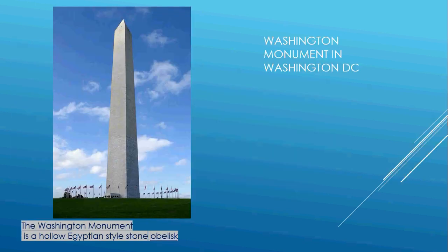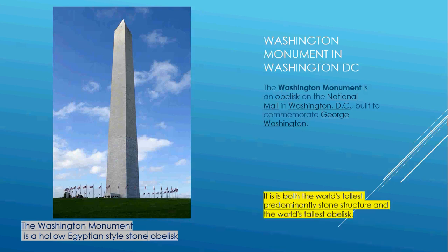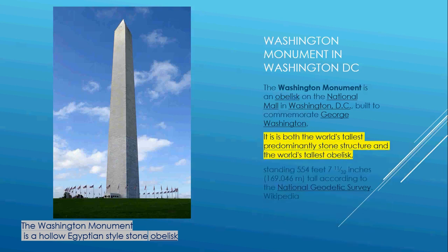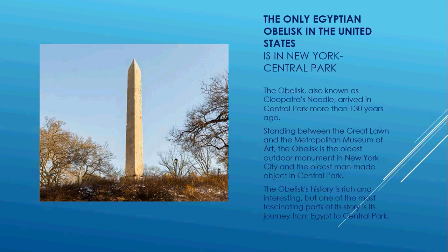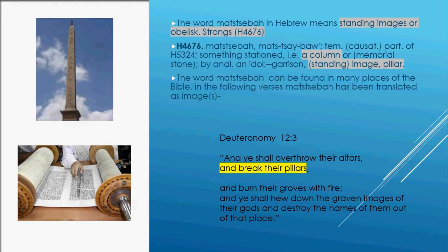Did you know we have obelisks here in America? There's the Washington Monument in Washington DC — it is both the world's tallest and one of the most prominent stone structures, and it's hollow. We also have one from Egypt in New York's Central Park, transported here in the 1800s, and it does represent sun worship.